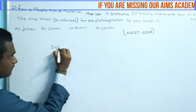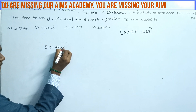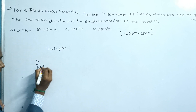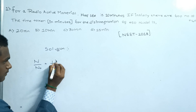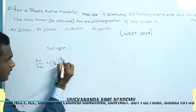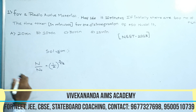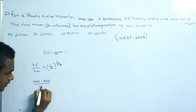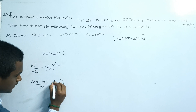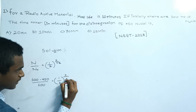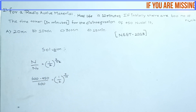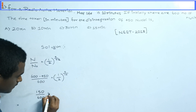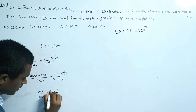Let's go for the solution. The formula used for this question is N/N₀ = (1/2)^(T/T½). Here we substitute for N: 600 minus 450, which gives the remaining nuclei. For N₀ we substitute 600. So we get (600 - 450)/600 = (1/2)^(T/10), where T is what we need to find and T½ is 10 minutes. When we compute 150 divided by 600, we get 150/600 = (1/2)^(T/10).